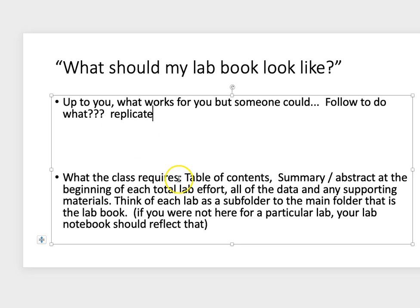What the class actually requires of you: There should be a table of contents. There should be some summary or an abstract at the beginning of each total lab effort, right? So, if Helicopter Drop is a two-week lab effort, maybe you package all that stuff together so that all of the data, any supporting materials, is with that. And what I want you to do is think of each lab as a subfolder to the main folder that is your lab book. Note, some people have already started missing labs, which is kind of weird, but if you were not here for a particular lab, your lab notebook should reflect that. Now, what that means is maybe you're working with the rest of your group and you guys are collecting data and sharing data, but you should put the correct attribution to who did the effort. If it wasn't you, I don't want to walk away from your lab book thinking that you were the person who actually did it.